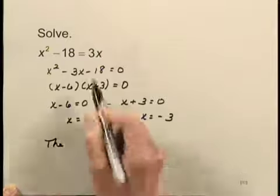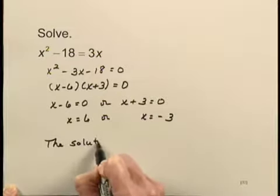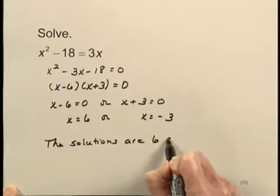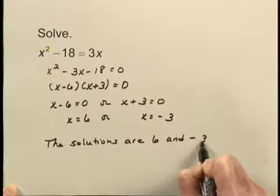And if we would check these back in the original equation, we'd find that they do check. So we would say that the solutions are 6 and negative 3.